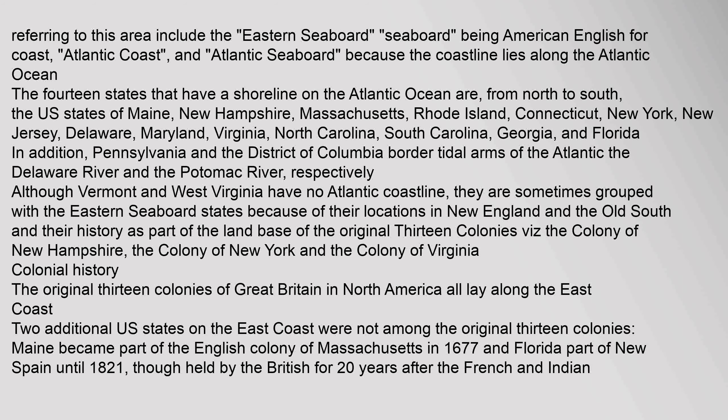In addition, Pennsylvania and the District of Columbia border tidal arms of the Atlantic — the Delaware River and the Potomac River, respectively. Although Vermont and West Virginia have no Atlantic coastline, they are sometimes grouped with the eastern seaboard states because of their locations in New England and the Old South, and their history as part of the land base of the original 13 colonies.